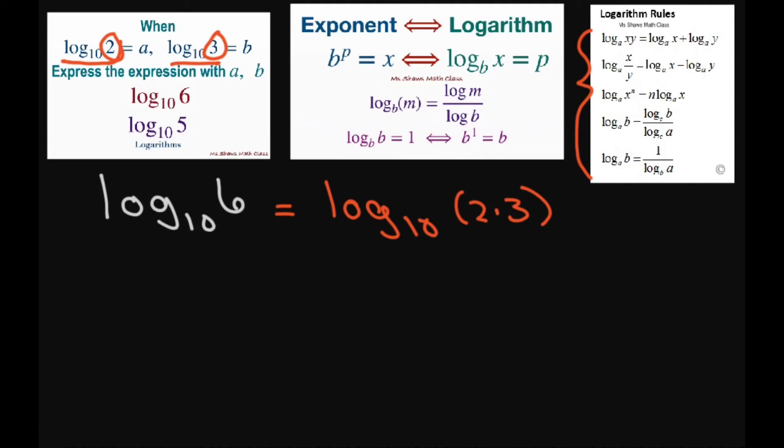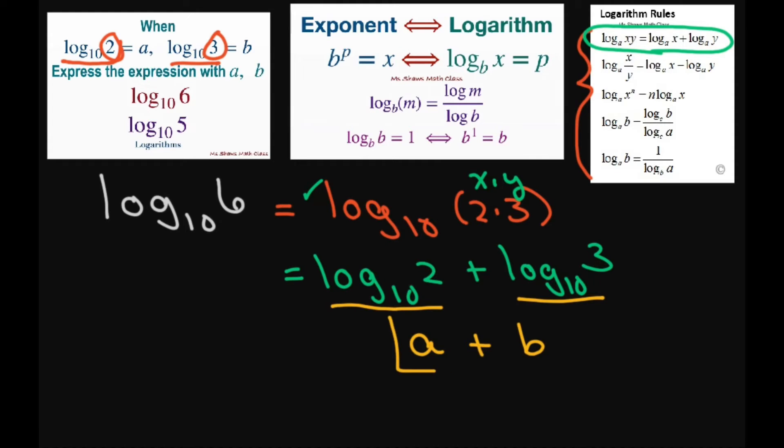And then I'm going to expand my log base 10 using my product rule and write it as a sum of logs. So this is going to be log base 10 of 2 plus, this is like your x times y, log base 10 of 3. Now using substitution we're going to get log base 10 of 2 is a and log base 10 of 3 is b. So that's our expression with a and b.